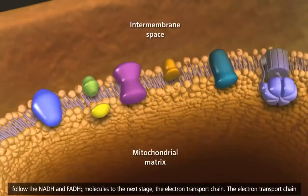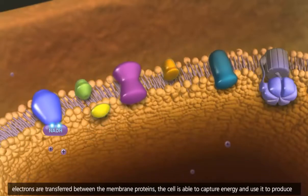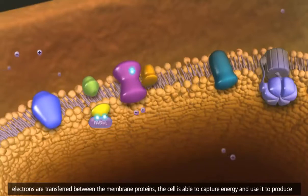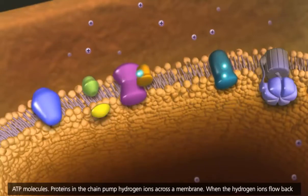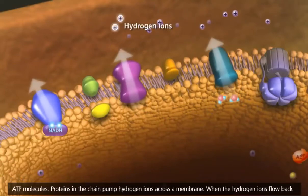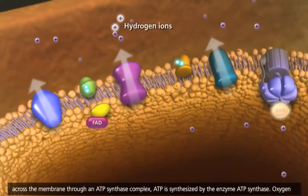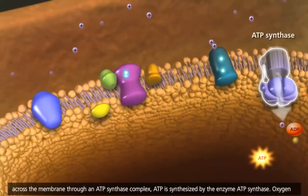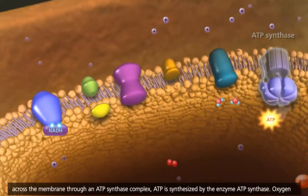The electron transport chain is a series of membrane-bound carriers in the mitochondria that pass electrons from one to another. As the electrons are transferred between the membrane proteins, the cell is able to capture energy and use it to produce ATP molecules. Proteins in the chain pump hydrogen ions across a membrane. When the hydrogen ions flow back across the membrane through an ATP synthase complex, ATP is synthesized by the enzyme ATP synthase.